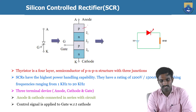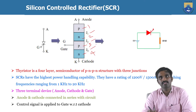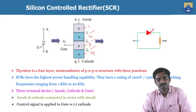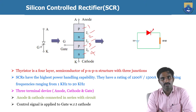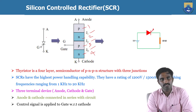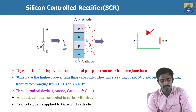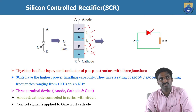The SCR has four layers — 1, 2, 3, and 4 — and three junctions which are J1, J2, and J3. This is a four-layer, three-junction device. When coming to the symbolic representation of the SCR, like the diode having two terminals — anode and cathode — in addition to that, the SCR has another terminal which is the gate. So it is a three-terminal device: anode, cathode, and gate, and also having three junctions.